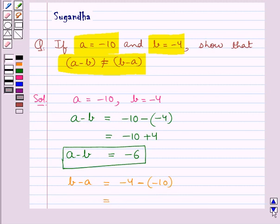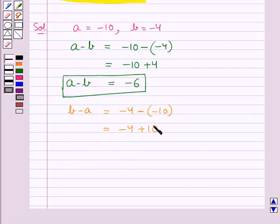This is equal to minus 4 plus 10 equal to 6. We get B minus A is equal to 6.